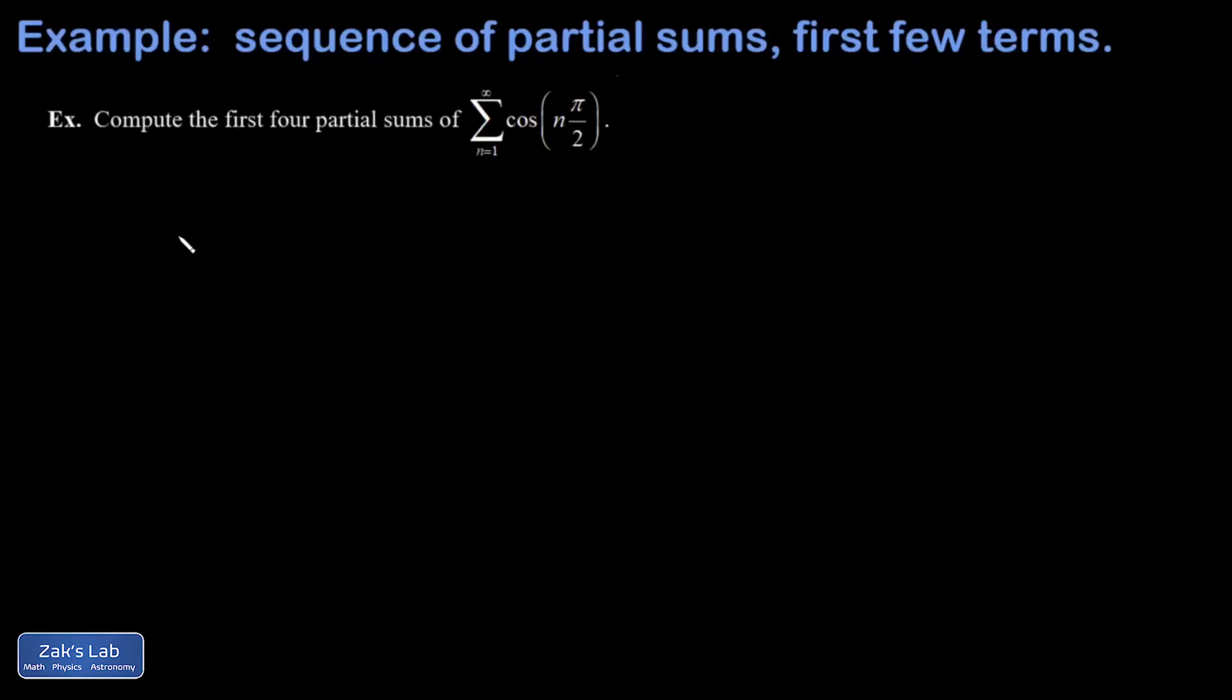In this problem we're asked to compute the first four partial sums of this series, the sum from n equals one to infinity of cosine n pi over two. So just a quick reminder of what a partial sum is. The partial sum S_n is the sum of the first n terms of the series.